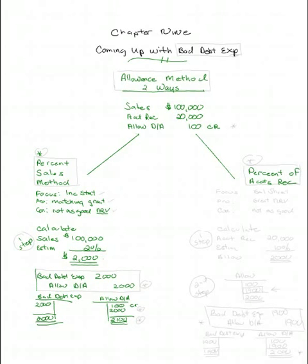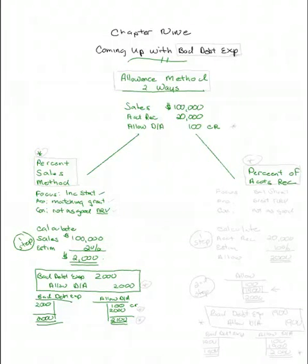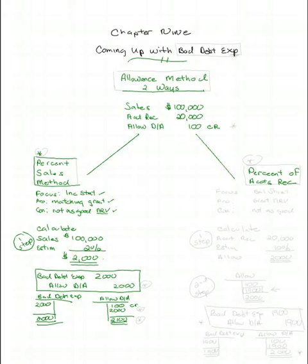The entry to record bad debt expense under the Percent of Sales Method is done in one step: sales, percent, amount, entry. I call it the one-step method, and notice it focuses only on income statement accounts. The matching is great, but we haven't really looked at the relationship between accounts receivable and the allowance account, so it's not as good for net realizable value calculations. That's the Percent of Sales Method.